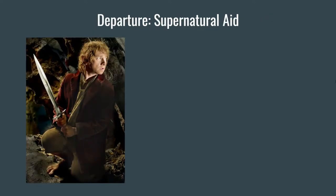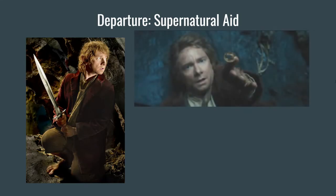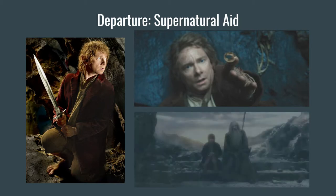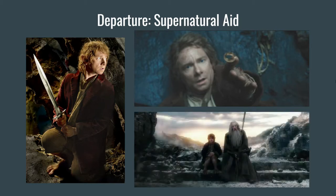The elements of supernatural aid that Bilbo accumulates over the course of the story include his sword Sting, which lights up when goblins are nearby so he can tell when danger is present. He also has the ring he ends up stealing from Gollum, which turns him invisible and helps out on a number of occasions. And he has the help, guidance, and wisdom of Gandalf the wizard. Supernatural aid can be people or items — all of these qualify.